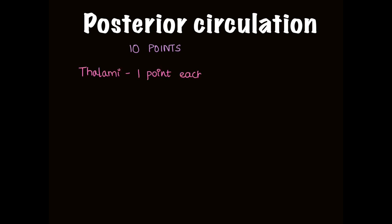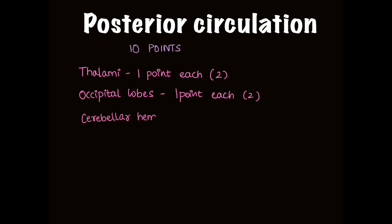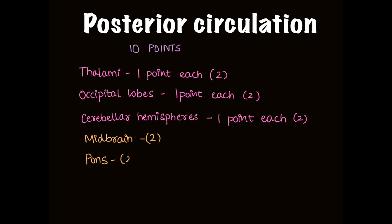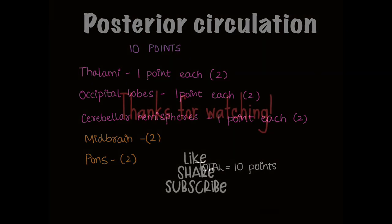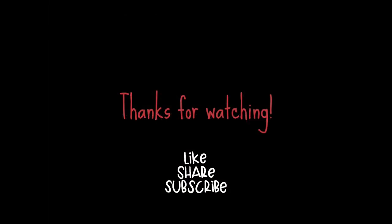ASPECT score was later applied to posterior circulation as well, also given 10 points. The thalami contribute 2 points (one each), occipital lobes 2 points (one each), cerebellar hemispheres 2 points, midbrain if involved 2 points, and pons if involved 2 points, giving a total of 10 points.